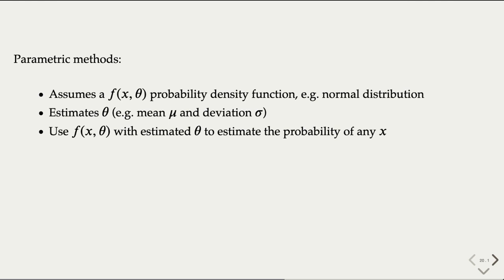A parametric method assumes a specific model of probability density distribution, such as the normal distribution. Different distribution functions may require different parameters to be estimated based on the sample data. A normal distribution, for example, requires two parameters: the mean and the deviation or variance. After the parameters are estimated, it is then possible to compute the probability of an individual data value. A value with a very low probability is a potential outlier.